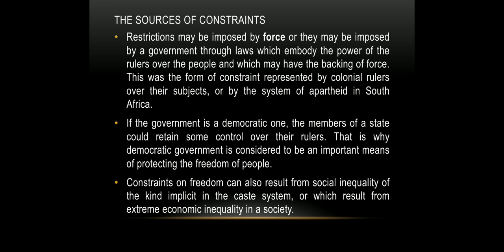Now the next topic is the sources of constraints. There are three major sources. The first is constraints imposed by force, or imposed by a government through laws which embody the power of the rulers over the people. If you forcefully impose any constraint, citizens will never respect such rules. If such constraints are unjustified, citizens can start movements and protests.